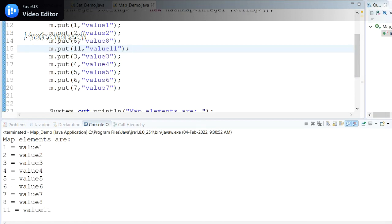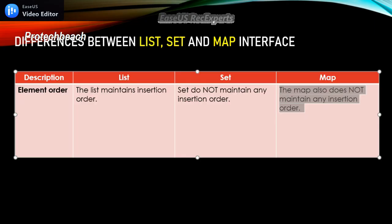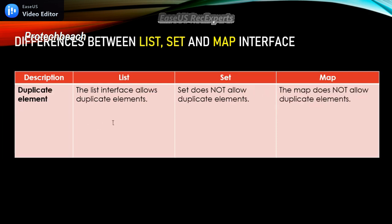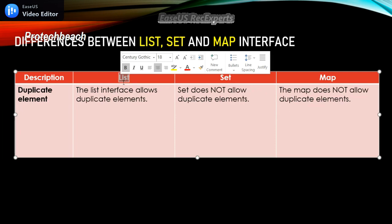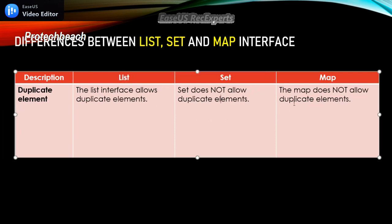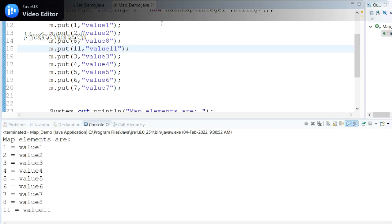Now let's move on to the next difference. The second difference is duplicate elements. The List interface allows duplicate elements, but Set and Map do not allow duplicate elements. Let me go back to Eclipse to demonstrate this.